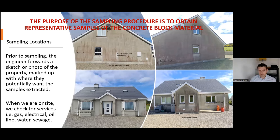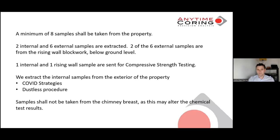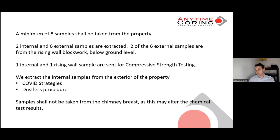Here we have an example: prior to sampling, an engineer would forward us a photo or sketch of the property marked up with where they potentially want the samples extracted from. When we're on site, we check for services — for example, gas, electrical, oil line, waste, or sewage. We take great care because we definitely don't want to hit any services on site. An absolute minimum of eight samples shall be taken from each property: two internal and six external samples. Two of the six external samples are from the rising block work below ground level. One internal and one rising wall sample are sent for compressive strength testing.